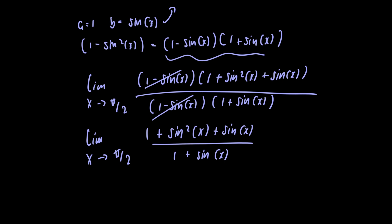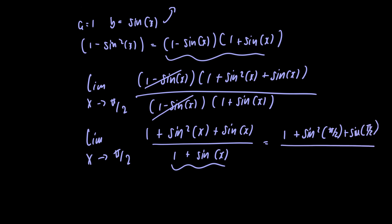Now we can go ahead and plug in x equal to pi over 2, since we're no longer dividing by 0. Since sine of pi over 2 equals 1, we substitute to get 1 plus 1 squared plus 1 in the numerator, and 1 plus 1 in the denominator. This gives us 1 plus 1 plus 1 divided by 1 plus 1, which equals 3 over 2.